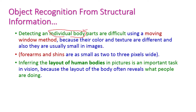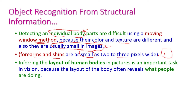Detecting individual body parts of a particular human being is very difficult using the moving window method, because body parts have different colors and textures and are also very small in the images. For example, the forearms and shins are very small and only two to three pixels wide in the image. So picking a particular person's body part using the moving window method is very difficult.